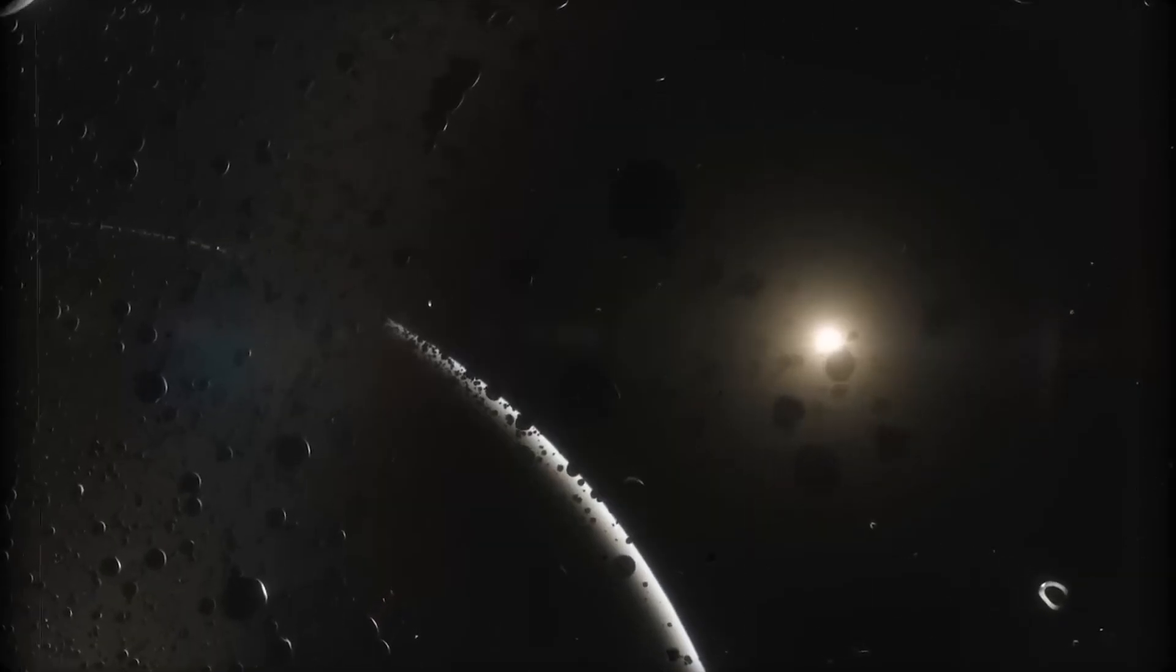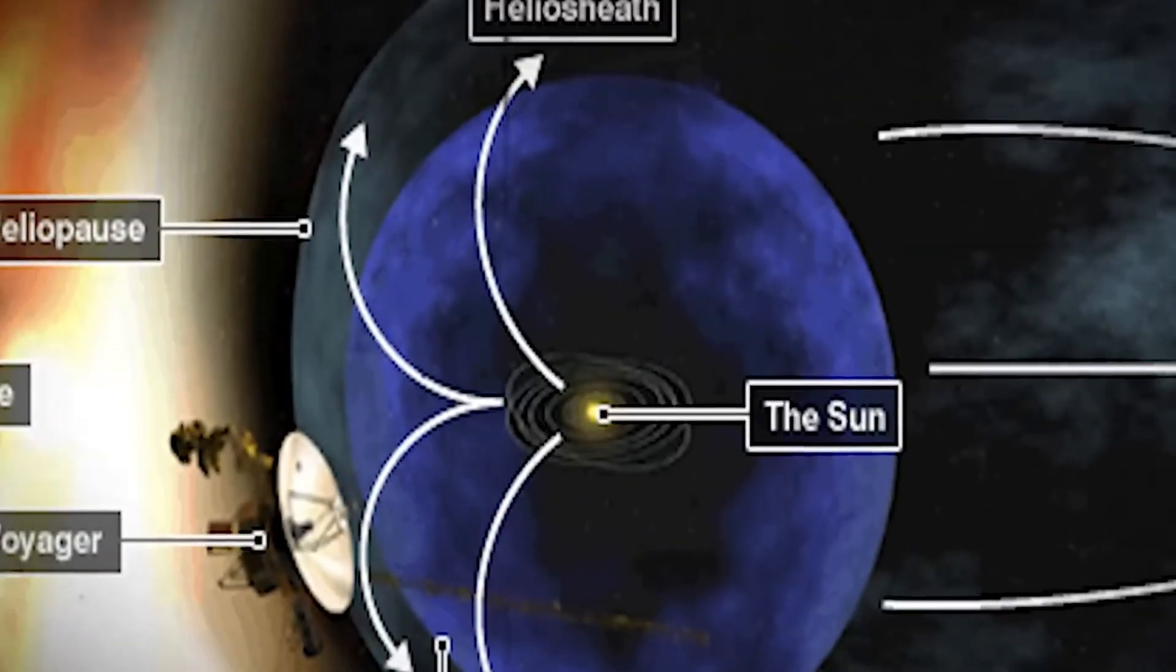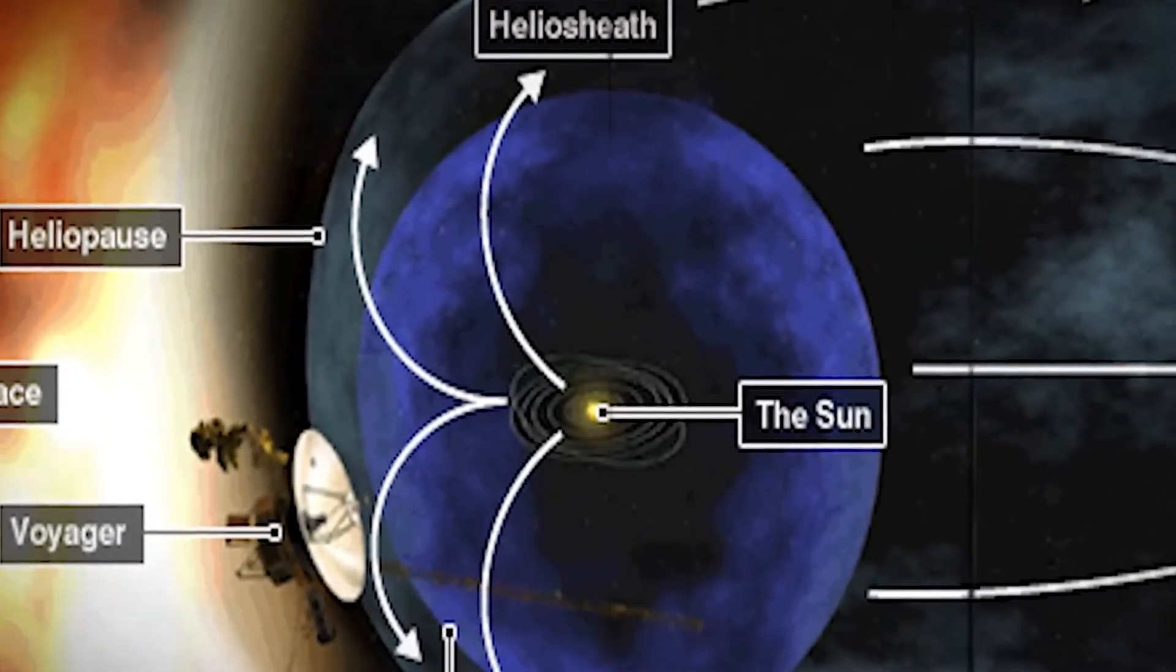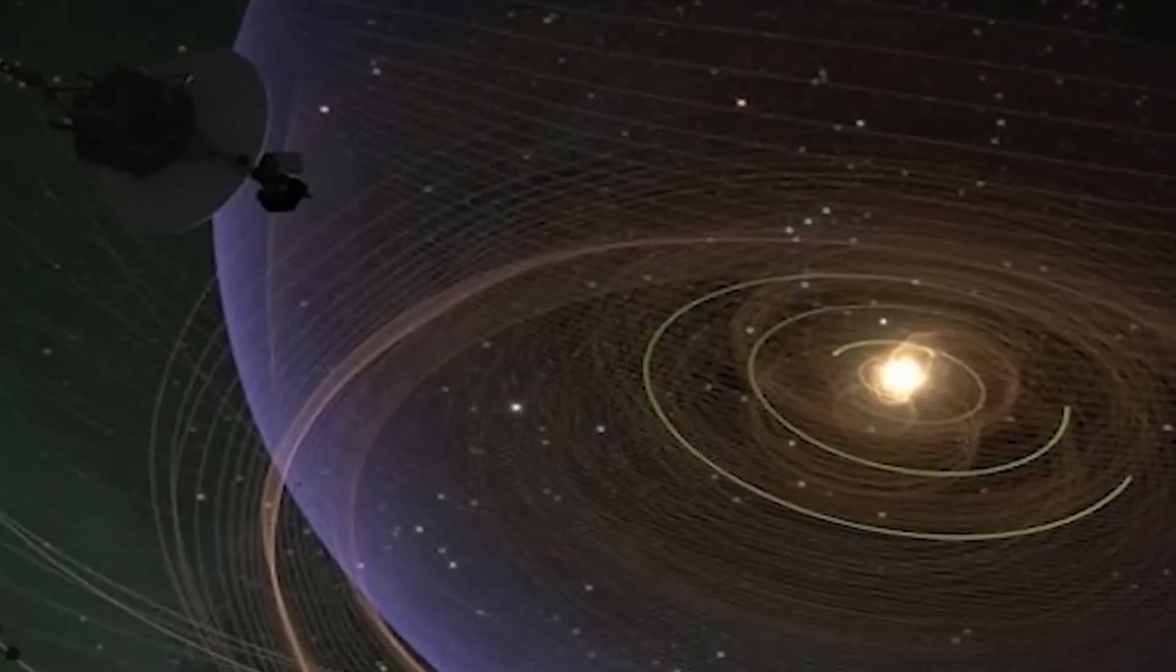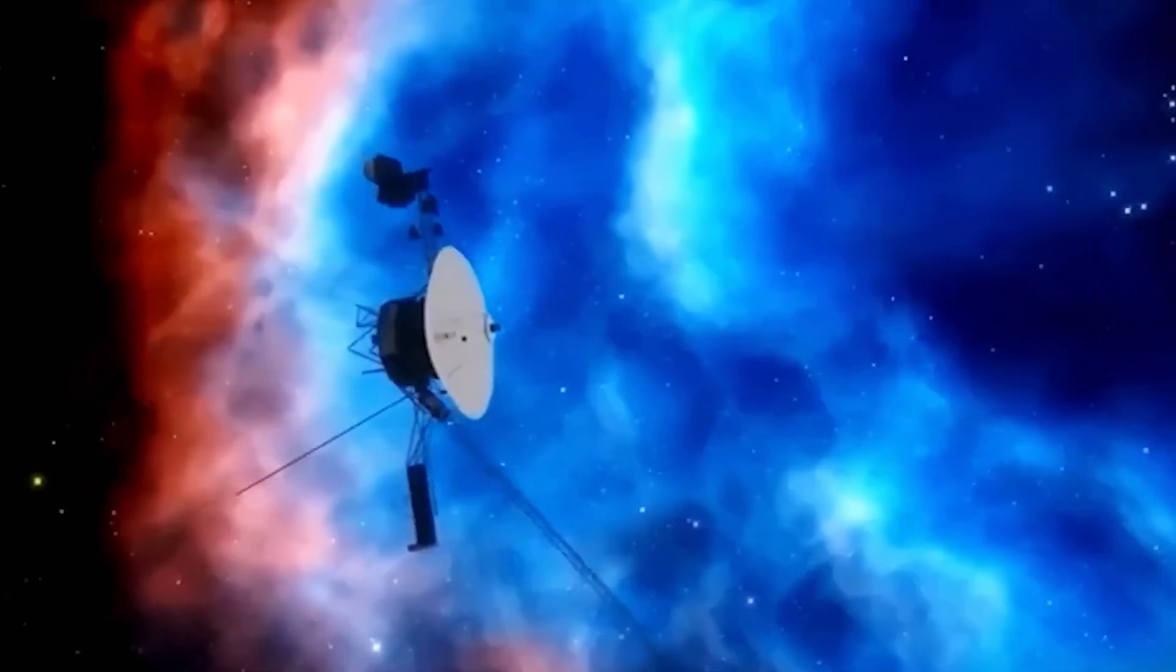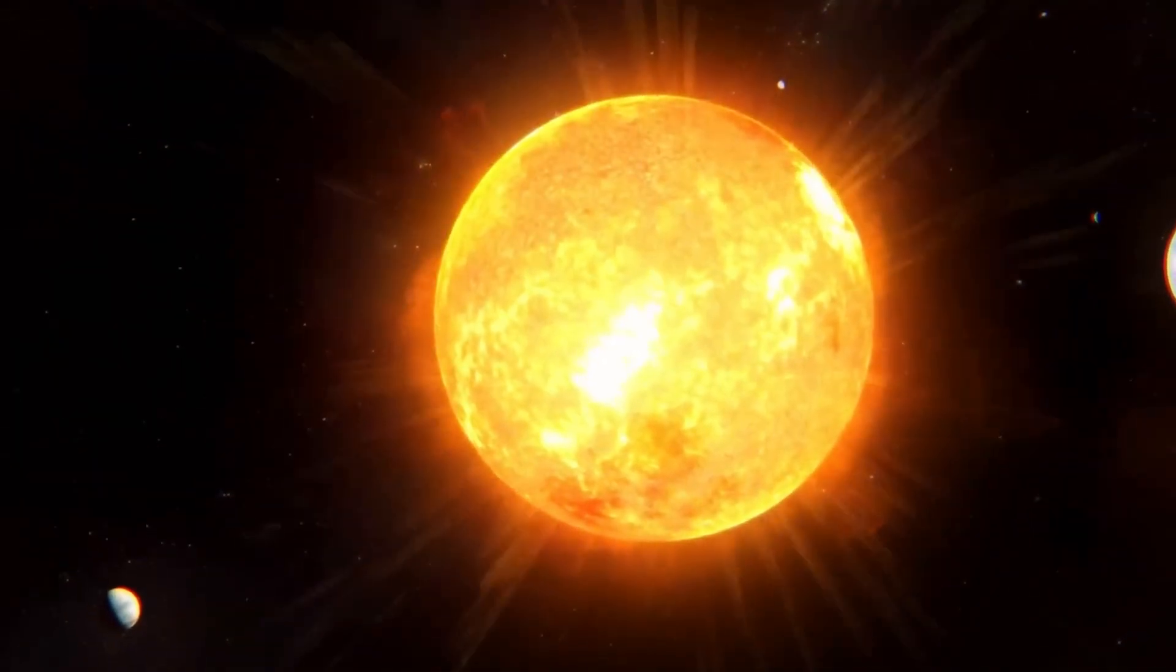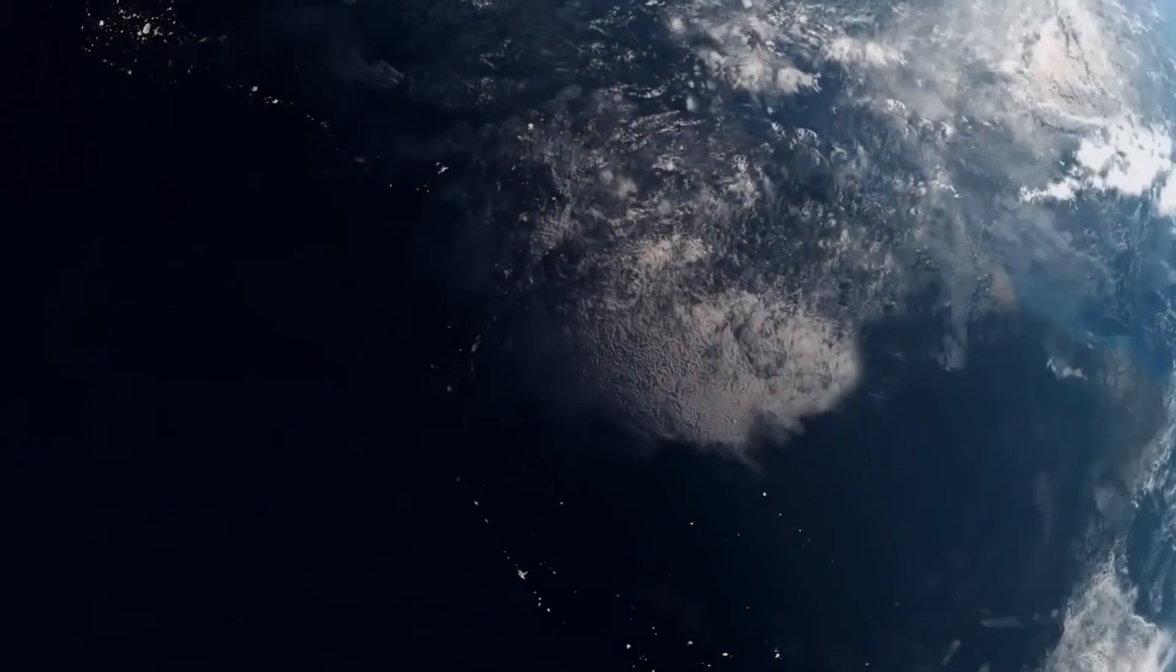This data revealed a surprising contrast: interstellar space is denser than regions near the Sun, but the heliosphere's outer edge is much less dense than areas closer to Earth. By analyzing this data, scientists pinpointed Voyager 1's official entry into interstellar space to August 25, 2012, using electron oscillation measurements and observations of charged solar particles. Voyager 2 followed suit, crossing into interstellar space six years later, confirming the profound scientific significance of these twin spacecraft.